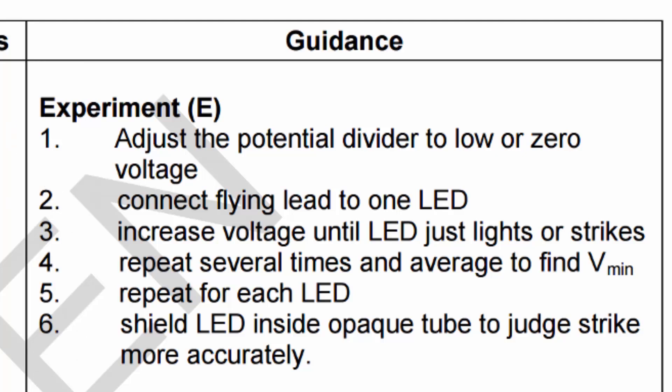So in order to carry out the experiment, first of all you need to set the potential divider to such a point that the voltage is very low or even zero, and then you connect your flying leads to one of the LEDs. You then gradually increase the voltage on the LED by adjusting the potential divider, increasing the voltage until the LED just lights. How this is done is usually by sticking an opaque tube, a dark tube, around the LED and you look down the tube and you can then judge the moment where the light just switches on.